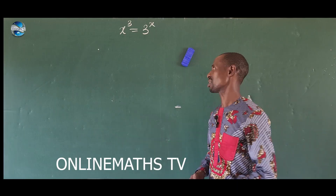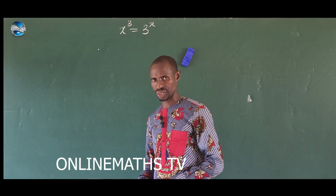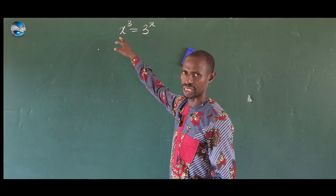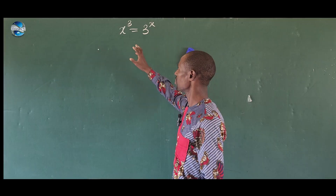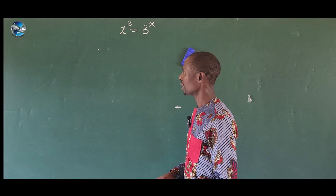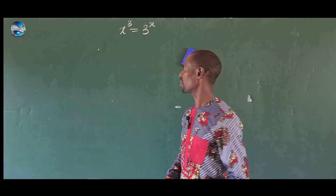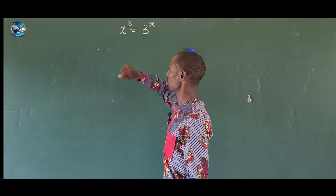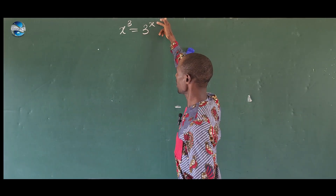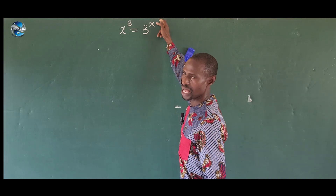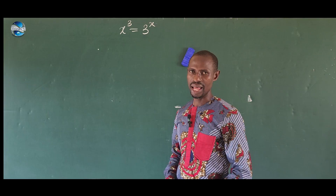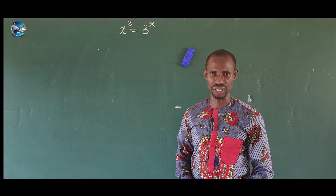Looking at this challenge, you discover that 3 is one of the roots, because we need to solve for a minimum of three roots. Let's check: if we put in 3 for x, then x³ is 3 to the power of 3, which gives us 27. And 3 to the power of 3 is also 27.